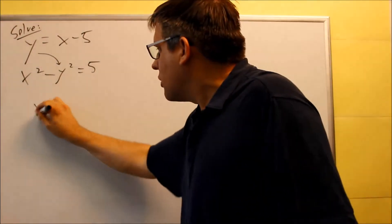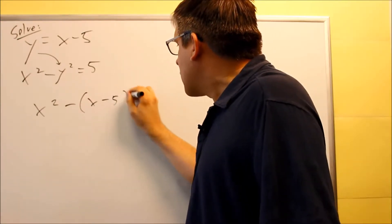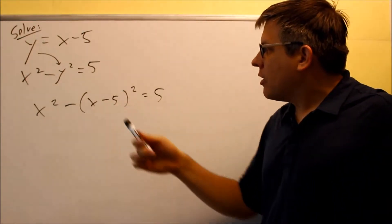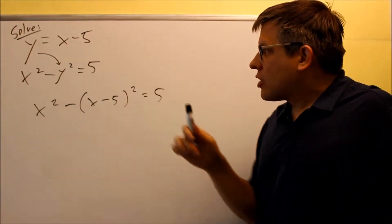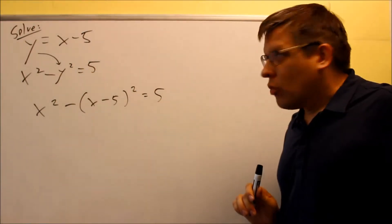So what that looks like is you have x squared minus, instead of the y, we put in x minus 5. That's going to be squared equals 5. By doing that, we got rid of the y, replaced it with x minus 5, but don't forget we have to square that because there was originally a square on the original y.